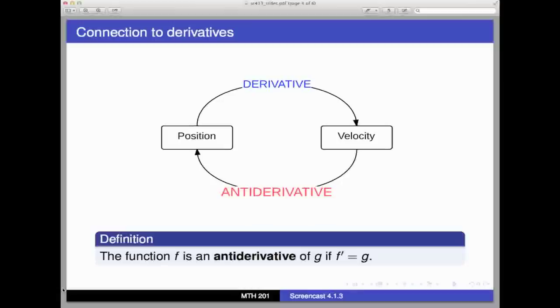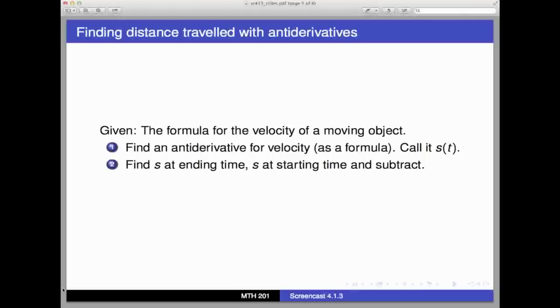We can use anti-derivatives to find distance traveled as follows. If we're given an object's velocity function as a formula, then we first try to find an anti-derivative for velocity, which will be another formula. Let's call that anti-derivative s of t. And this s of t, in some way, represents the position of the object relative to a starting point, because s prime is velocity. And so s of t has the right fingerprints to the object's position. Then we'll simply compute s evaluated at the ending time, minus s evaluated at the starting time. This gives us a difference in position, which is another way of saying the distance traveled. So let's do a concrete example.